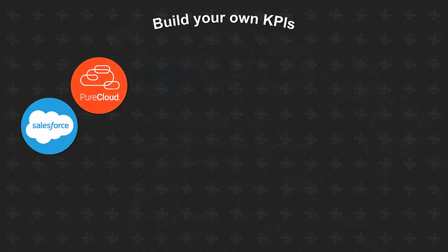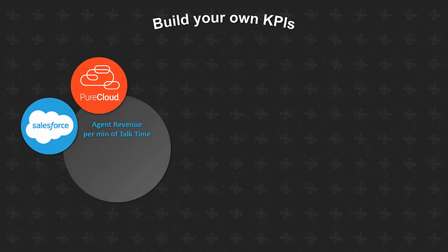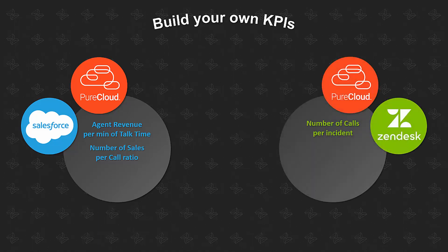This ultimately allows you to build your own cross-correlated KPIs. For example, if you have Salesforce and PureCloud data coming into the Emite dashboards, you can create KPIs like agent revenue per minute of talk time or number of sales per call ratio. Taking Zendesk and cross-correlating it with PureCloud data, you could have a KPI for the number of calls per incident or tickets with no interactions over the past seven days.